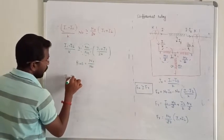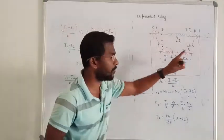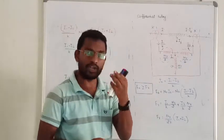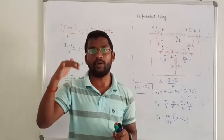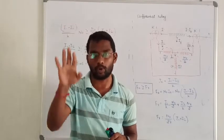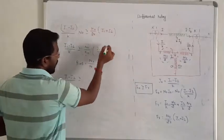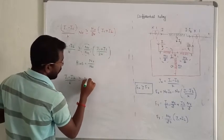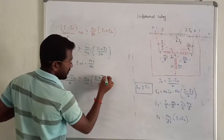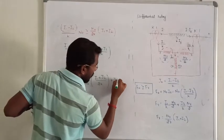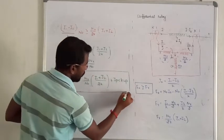From this, I1 minus I2 by K — the relay is going to operate because the operating force directly exceeds the restraining force. So we have to consider the pickup current, that is very important. This is the actual condition to operate the relay. This is all about differential relay.